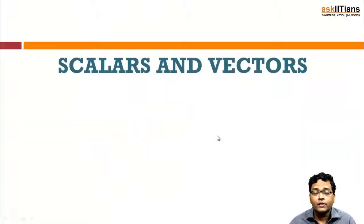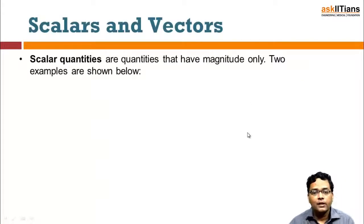The next topic we need to understand is scalars and vectors. What exactly are scalars and vectors? Scalar quantities are quantities that only have magnitude. They do not have direction. You do not need to specify direction to understand a scalar quantity.